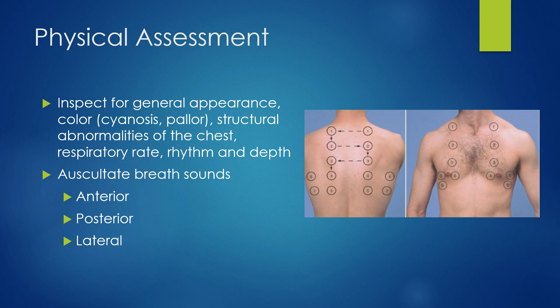We need to do our general assessment — look at our patient while they're sitting there. Do they appear comfortable or in distress? What does their breathing look like? How fast or slow are they breathing? Are they using accessory muscles, are they short of breath, are they wearing oxygen? We want to know their skin color: are they pale, blue, or pink? We need to assess cap refill, check their nails for clubbing, and assess the skin color of their extremities.